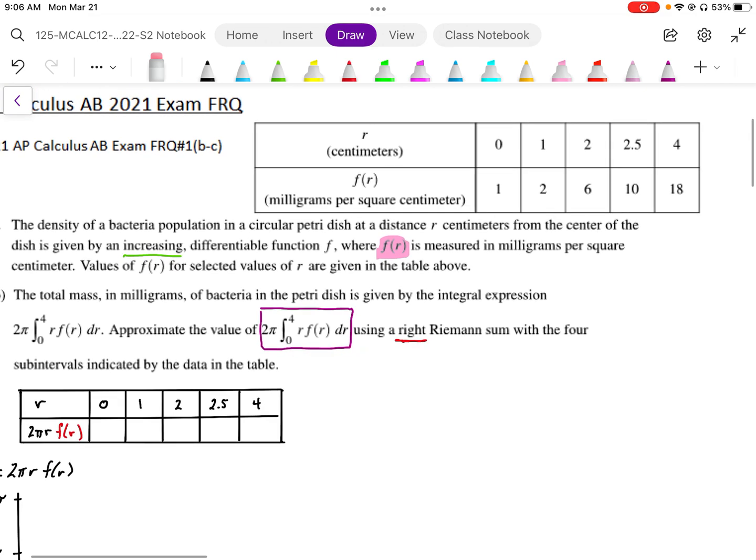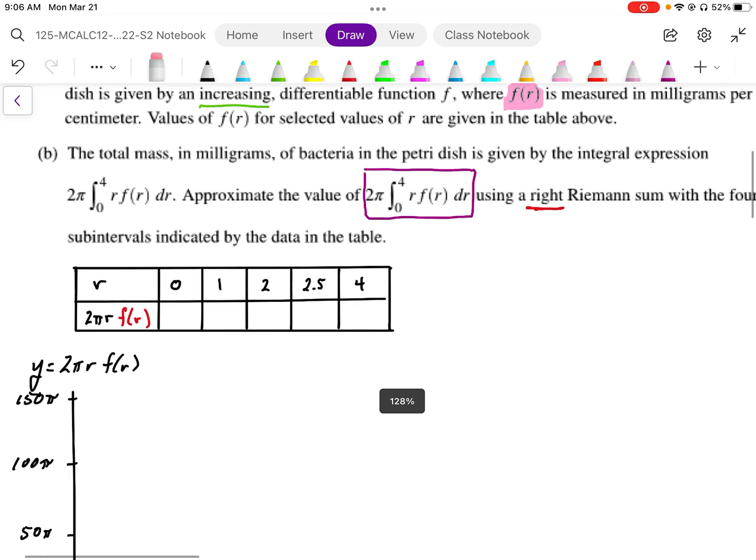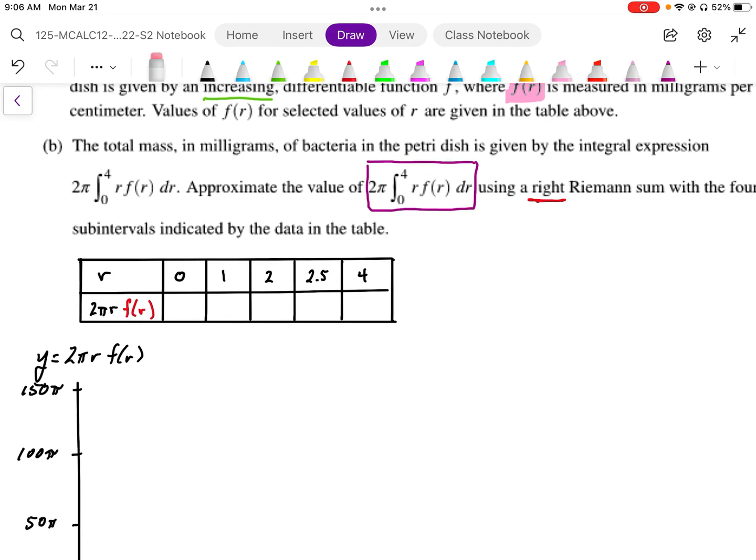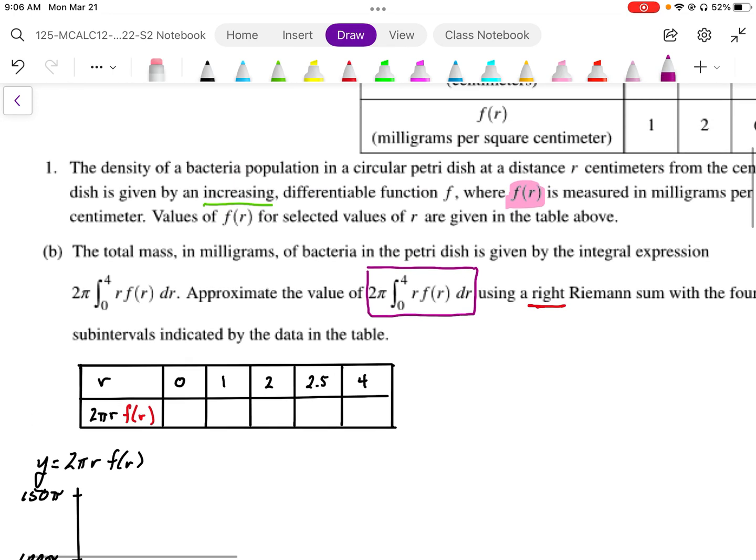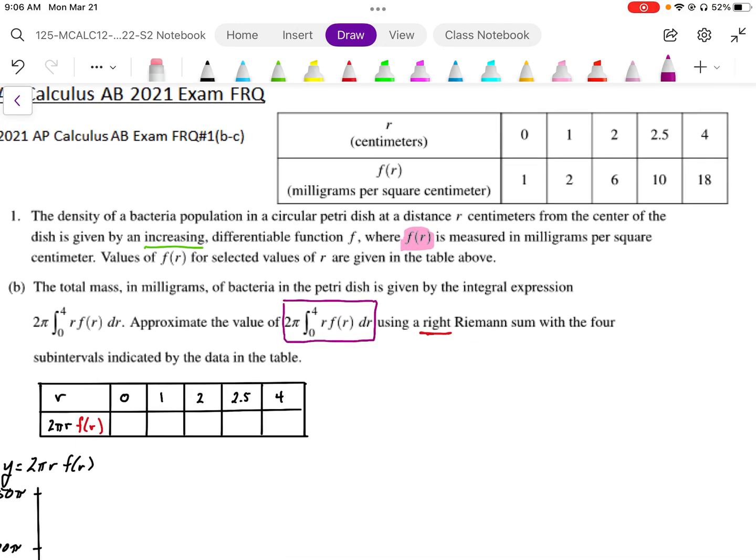We're being asked to find the right Riemann sum. We've been given information of f(r), but what we really need to integrate this is to have the height of the graph of 2π r f(r). So I'm going to use that table and determine the value of 2π r f(r) based on the table.